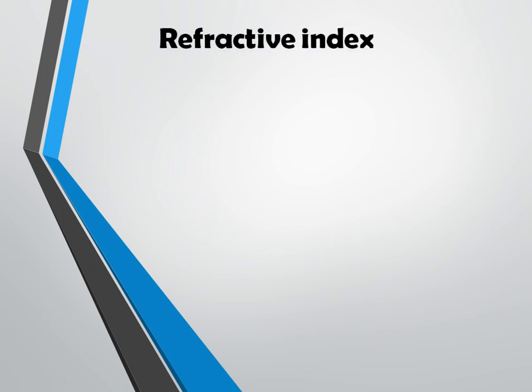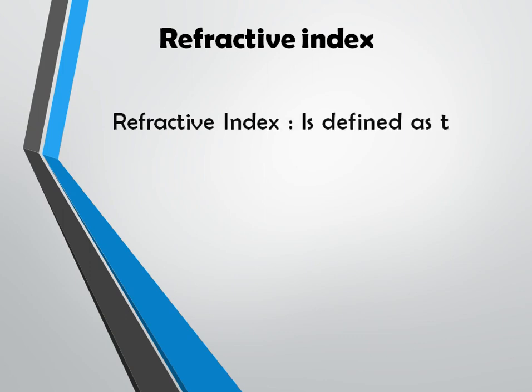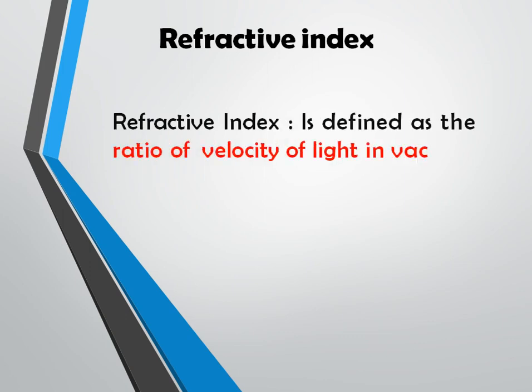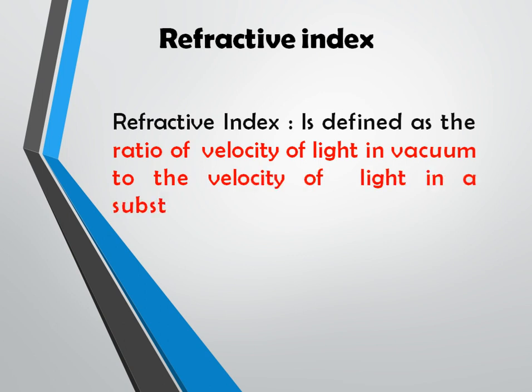Now we will see refractive index. Refractive index is defined as the ratio of the velocity of light in vacuum to the velocity of light in the substance at the same wavelength.